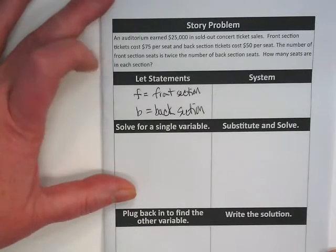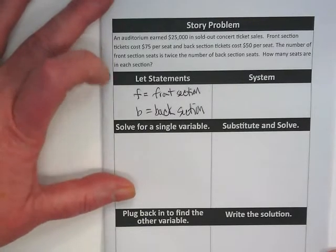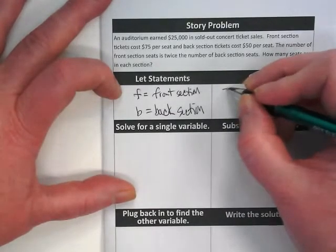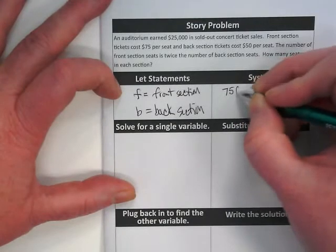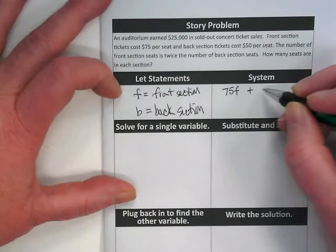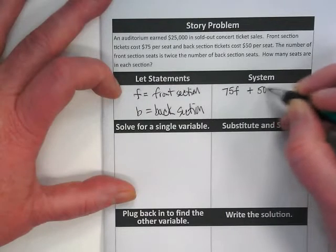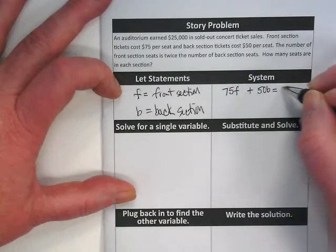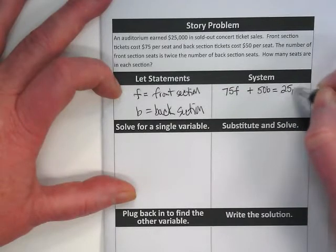We know from reading the equation how much each of them cost. How much does a front section seat cost? So my first equation, I'm going to put 75 times F plus 50 times B equals the total amount of money that they raised or earned.